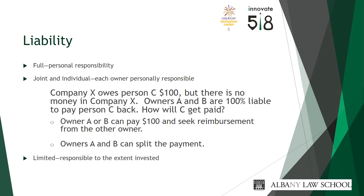Joint and individual liability exists if there is more than one business owner. In an entity that subjects its owners to joint and individual liability, each owner is personally responsible for the full debts of the business. This means that even though there are multiple owners, the debts must be paid in full, whether paid equally by all owners or disproportionately. Joint and individual liability allows a creditor to seek full reimbursement from any owner. Like full liability, joint and individual liability can extend to the personal assets of a business owner.